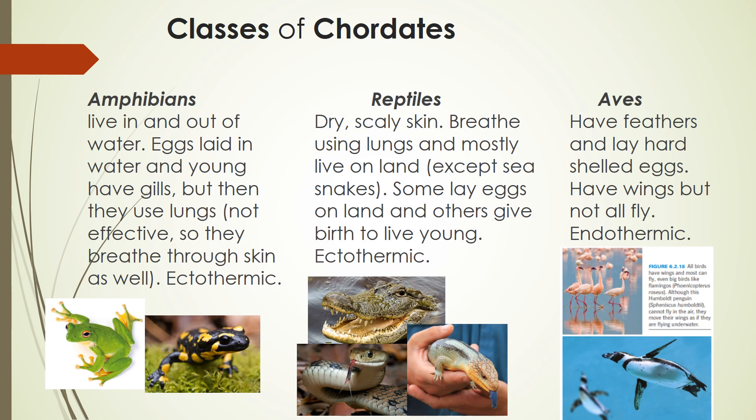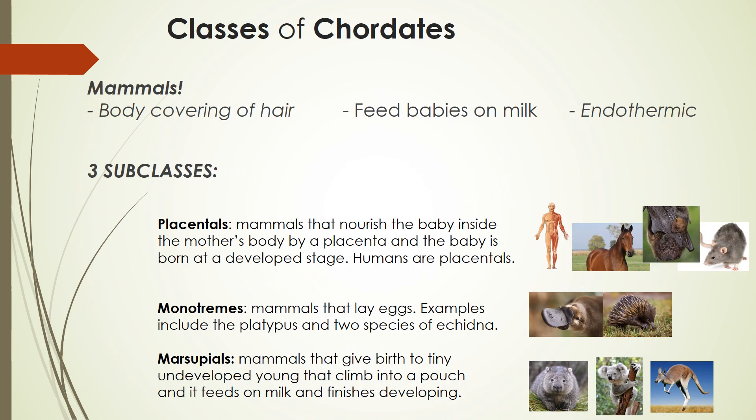On the right, we have Aves — the word sounds like 'aviary,' a cage for birds. They have feathers and lay hard-shelled eggs. Aves have wings, but as we know with the penguin, not all aves can fly. Aves are endothermic, meaning they can regulate their own body temperature and don't have to rely on their surroundings. And of course, we have mammals. Key characteristics of mammals are that they have hair, they feed their babies on milk, they're endothermic, their hearts have four chambers, and all mammals have sweat glands.